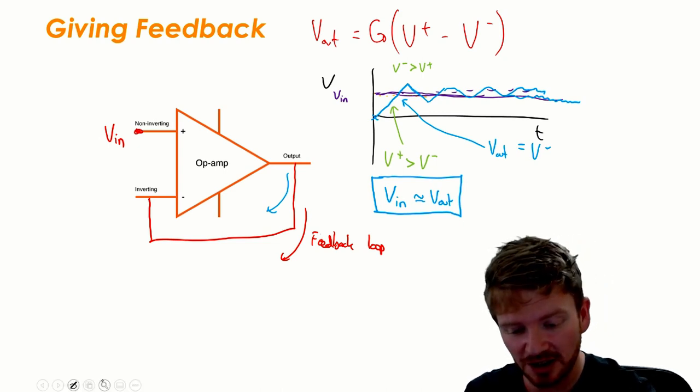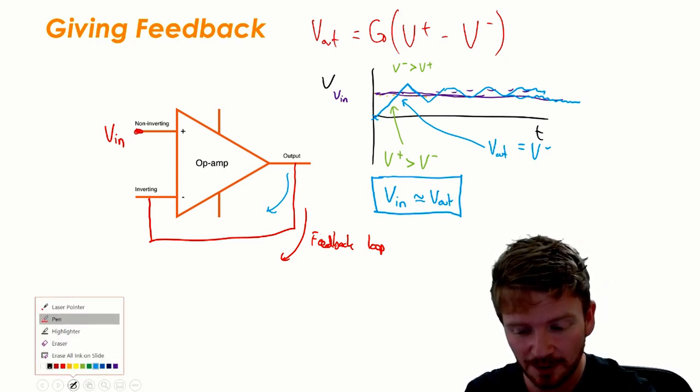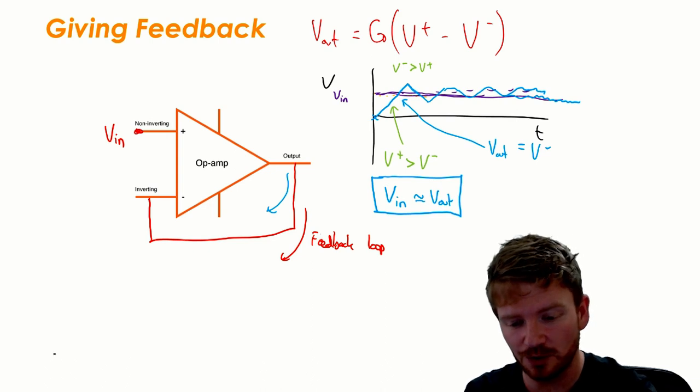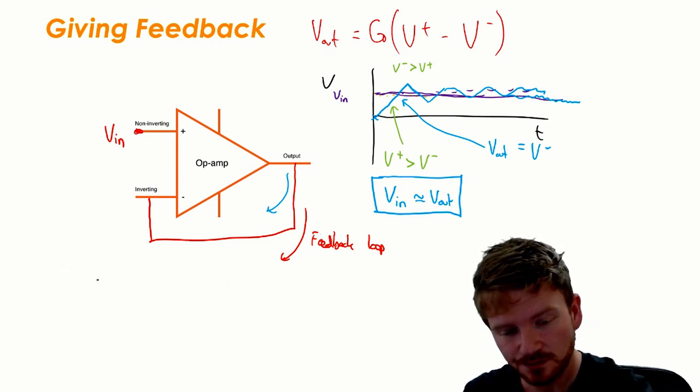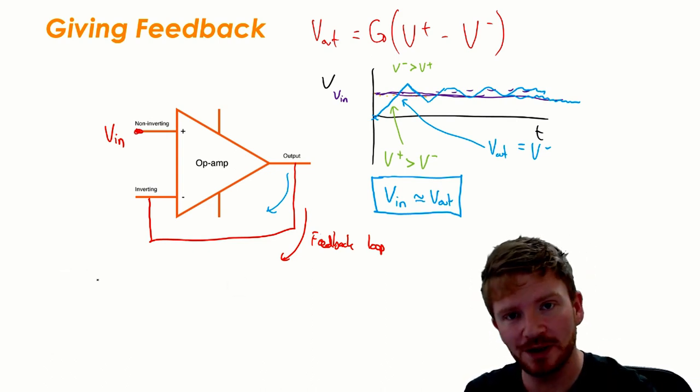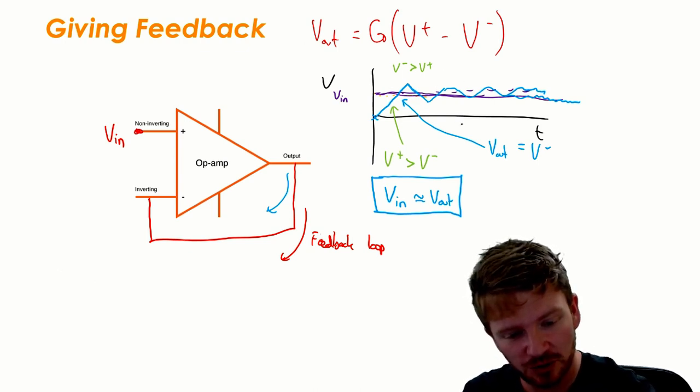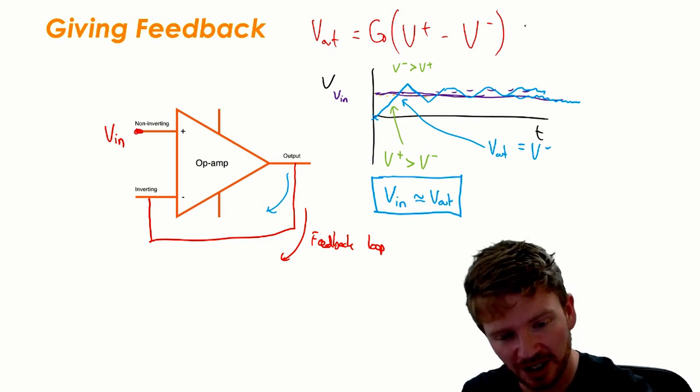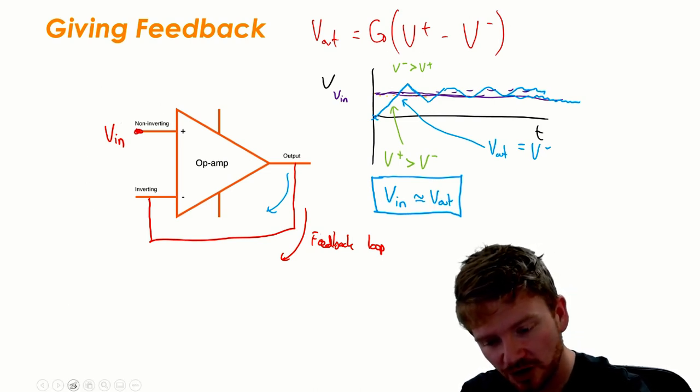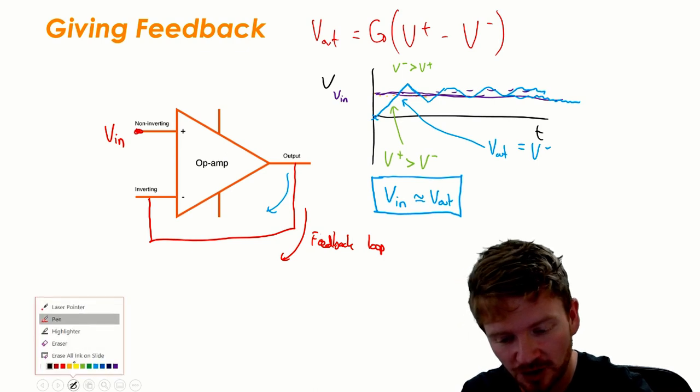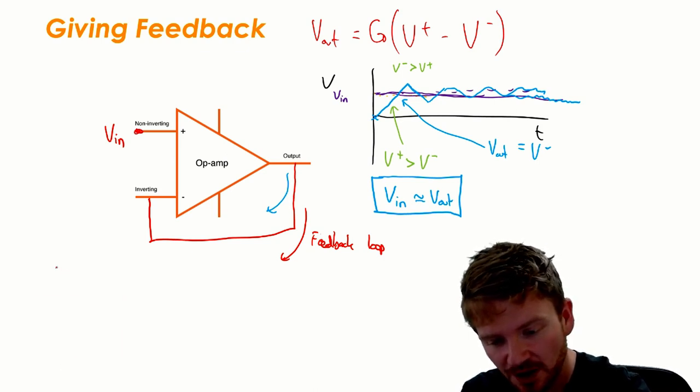Now I know some of you really like to do this the mathematical way so I am also going to talk this through mathematically now. So let's just think about what we have. If we go back to our gain equation over here we're going to use two different things. We're going to use the fact that we've got the gain, and we're also going to use the fact that because I've connected the two together, I can say V out is absolutely identical to the inverting input.